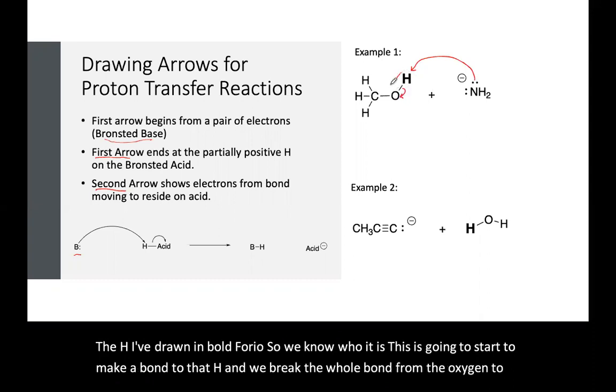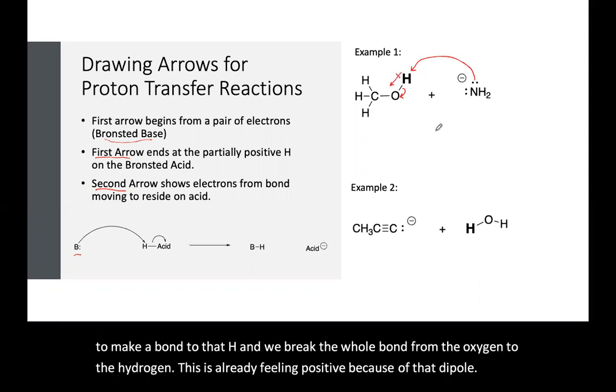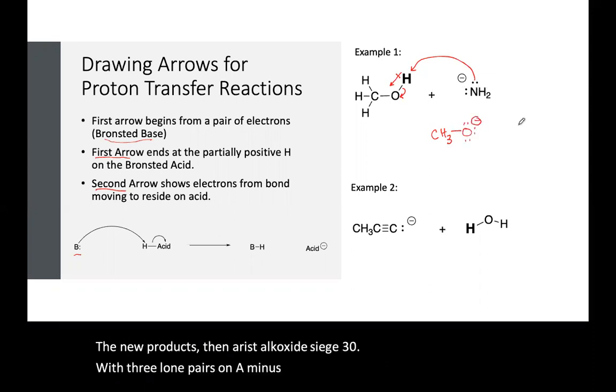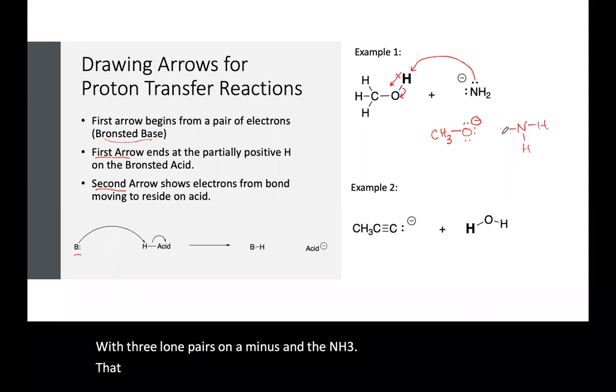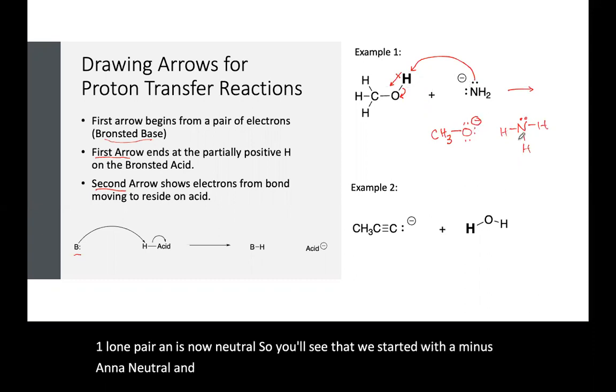This is already feeling positive because of that dipole. The new products then are alkoxide CH3O with three lone pairs and a minus, and the NH3 that has one lone pair and is now neutral. So you'll see that we started with a minus and a neutral, and we end up with a minus and a neutral.